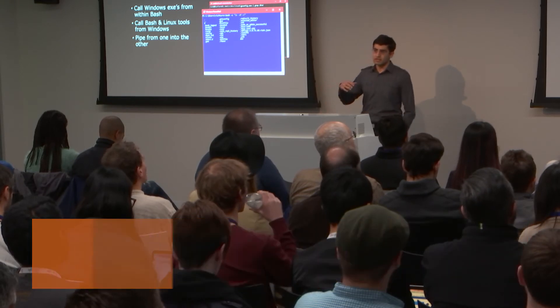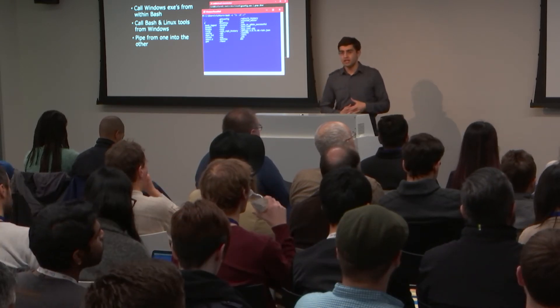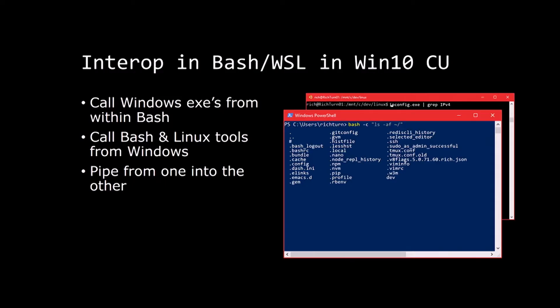The one that really sold me on this as a daily driver is the interop — making the Bash side and the Windows side actually talk to each other in a useful way. You can see up there I've got ipconfig.exe being run in Bash and piped into grep. It's an unholy combination you probably don't ever need to do, but we support it. The realistic scenario is I can run MS Build from Bash and build my Visual Studio project.